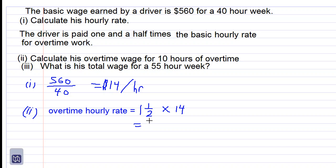2 on the 2 on the 1 is 3 over 2 by 14. 1 and the 14 is 7. 7 times 3 is $21 per hour.